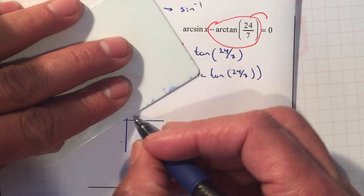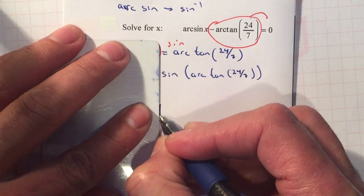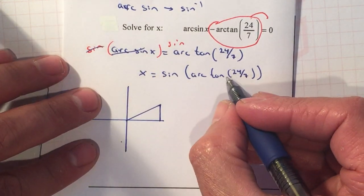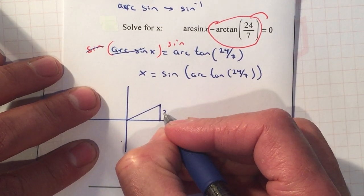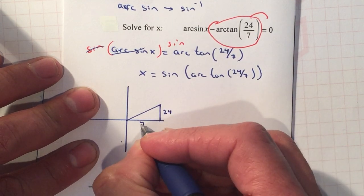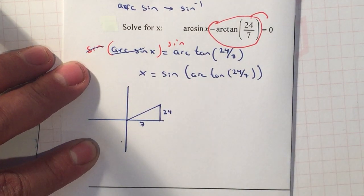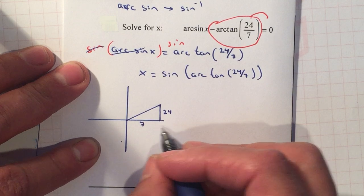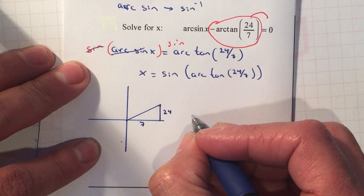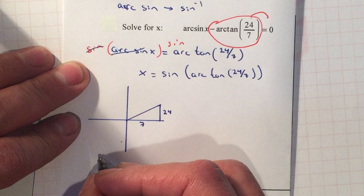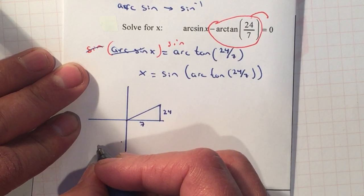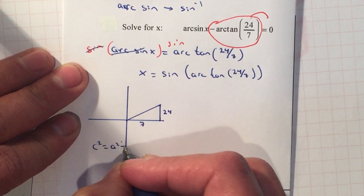We're just going to do a generic triangle. Tangent is your opposite over your adjacent. From there, I'm going to find the missing side, so we have C squared equals A squared plus B squared.